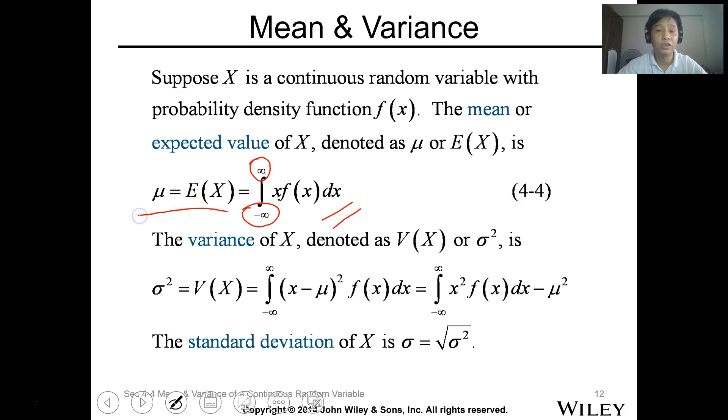That's for the mean value. For the variance naman, or your sigma squared, this is just yung difference ng X minus mean squared times f of X dx. So pareho lang yung formula, nagkaroon lang ng dx, and instead of summation, integration siya from negative infinity to infinity.